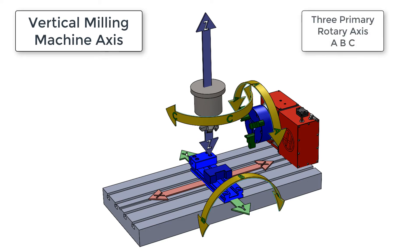There are also three primary rotary axes. The rotary A axis rotates about the linear x-axis, the rotary B axis rotates about the linear y-axis, and the rotary C axis rotates about the linear z-axis.